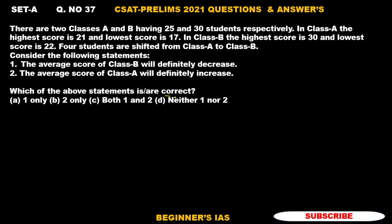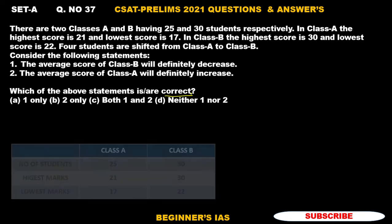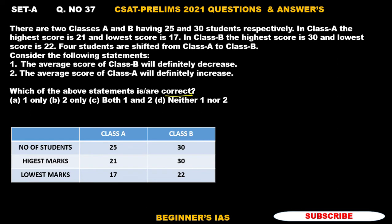We will form a tabular column with the given data. Number of students in class A is 25, class B is 30. The highest mark is 21 and lowest mark is 17 with respect to class A. With respect to class B, the highest mark is 30 and the lowest mark is 22.